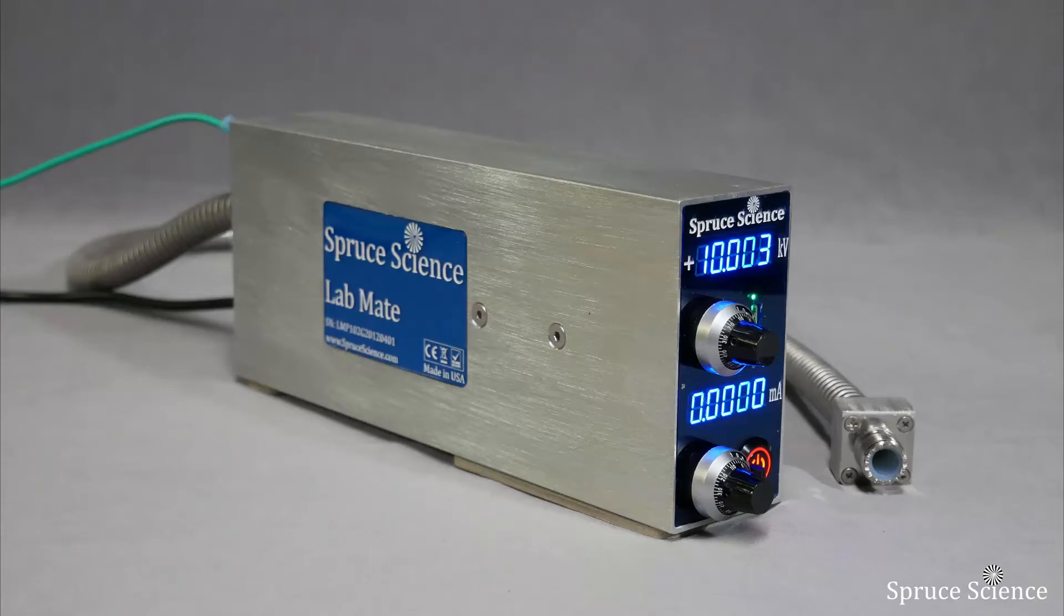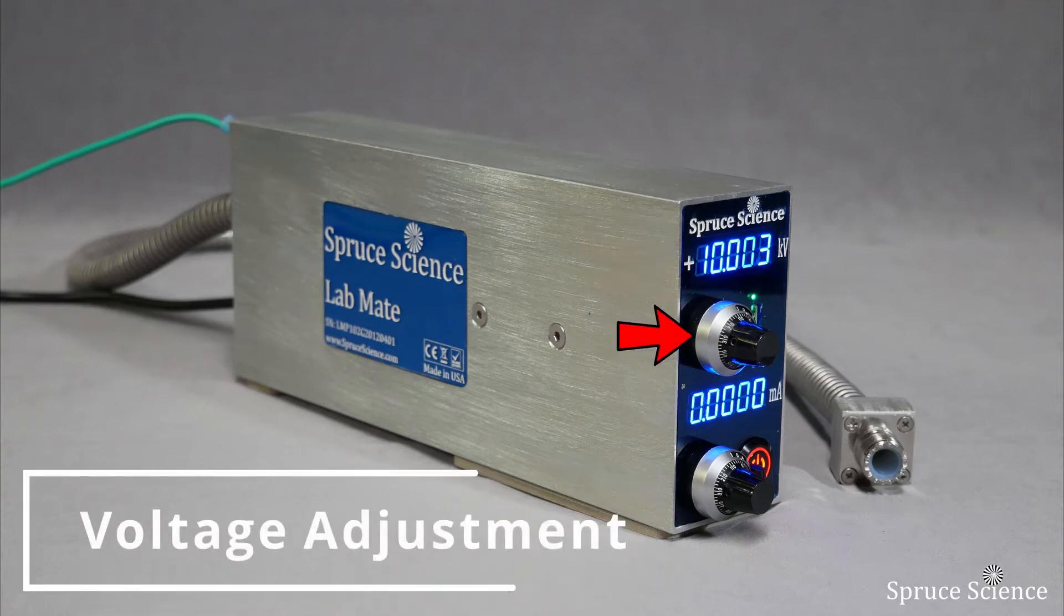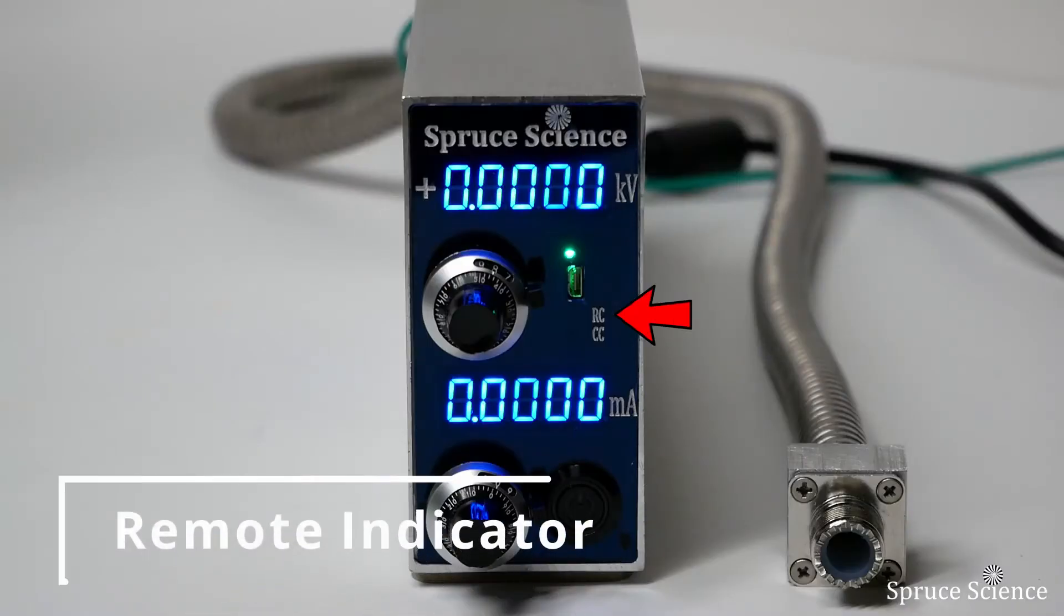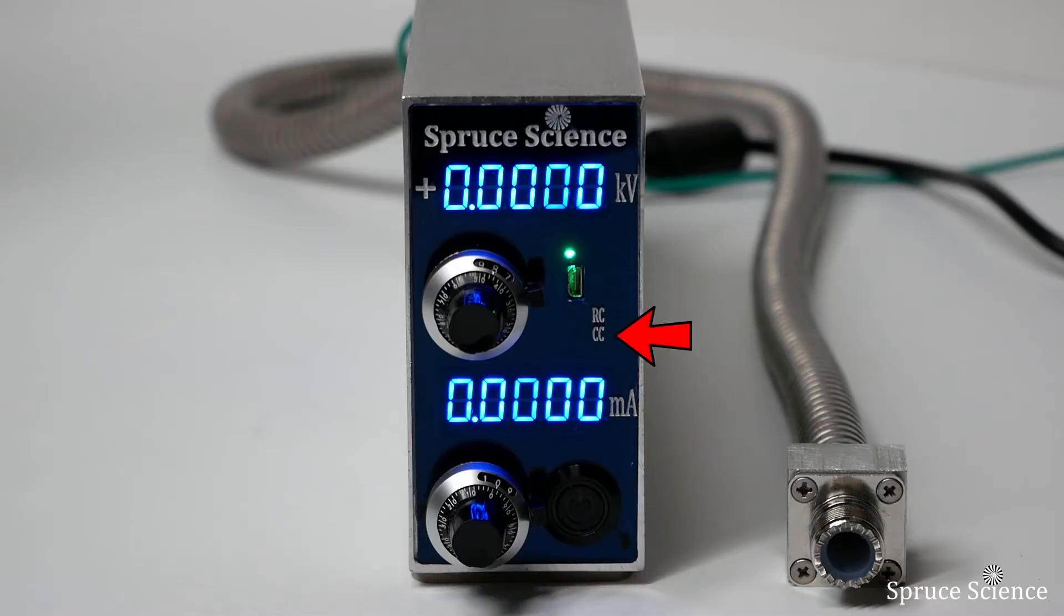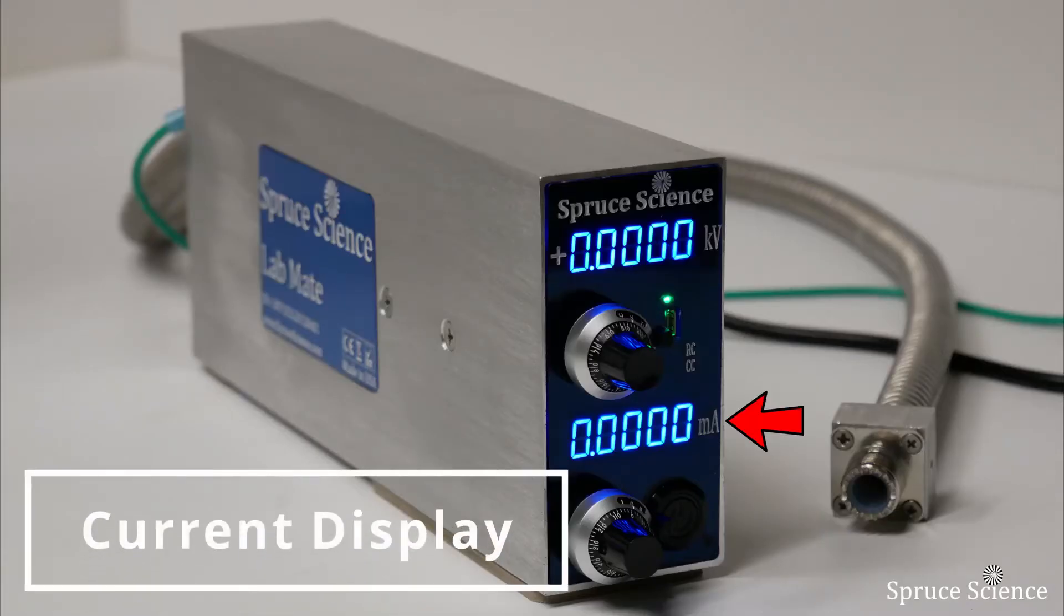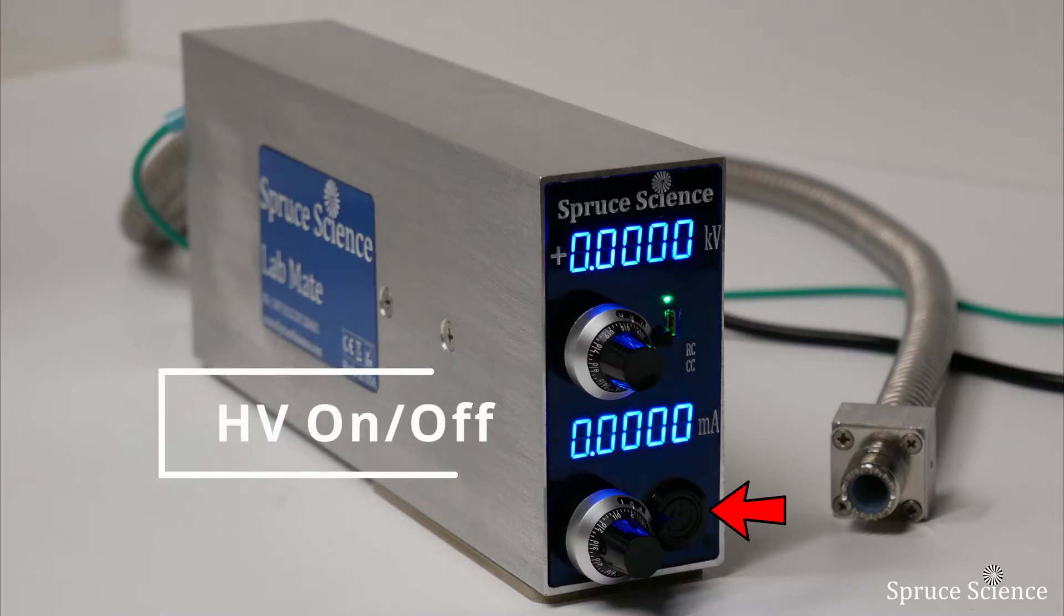Your front panel controls for the generator are as follows: voltage displayed in five digits, voltage adjustment dial with turn counting indicator, remote control receptacle, indicator light when the unit is under remote control, indicator light when output is in constant current mode, current display, current adjustment dial, and high voltage on-off switch.